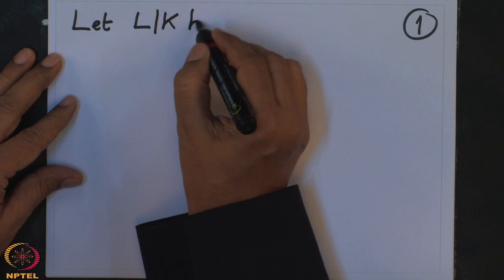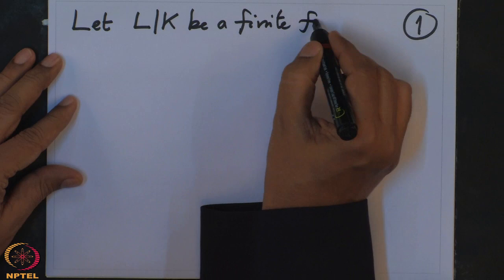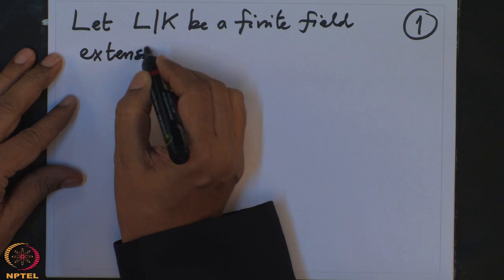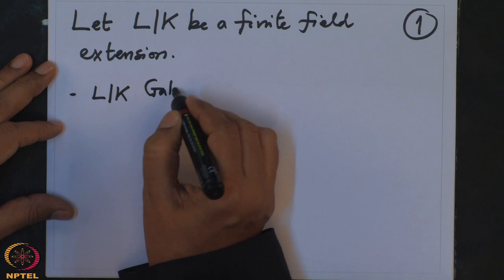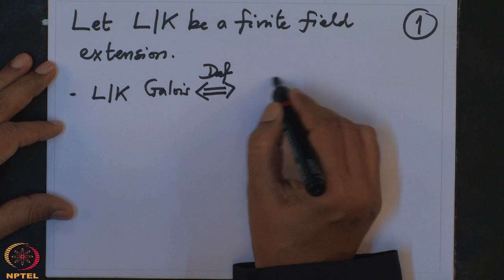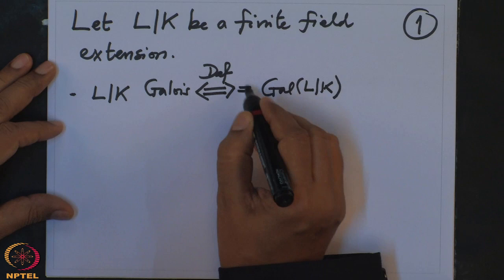Let me begin with the notation. We have been studying field extensions and in this course we have concentrated only on finite field extensions. So let L over K be a finite field extension. Let us summarize what we have done so far. We have defined when L over K is Galois — that is when the Galois group of L over K has order equal to the degree of the field extension.